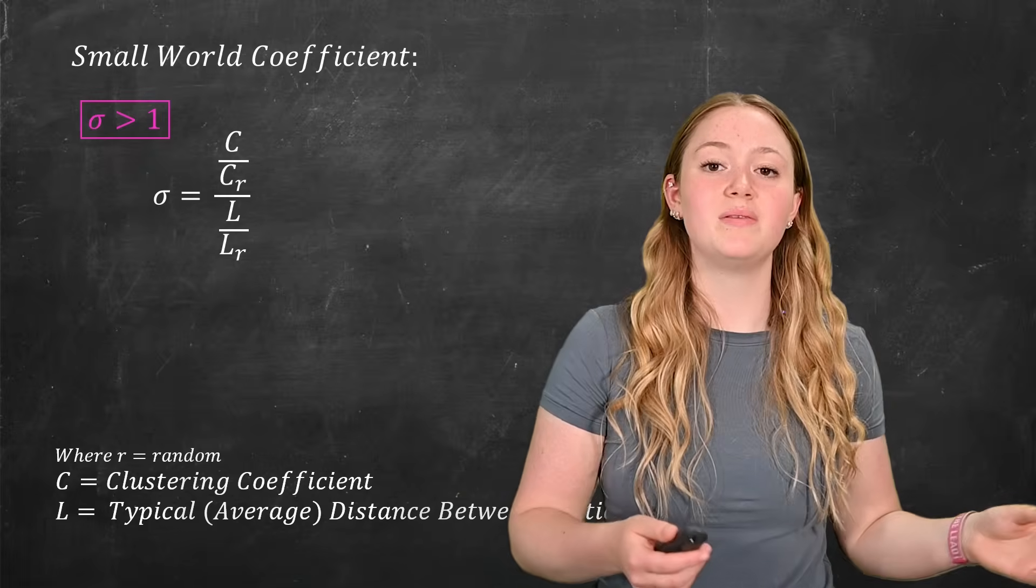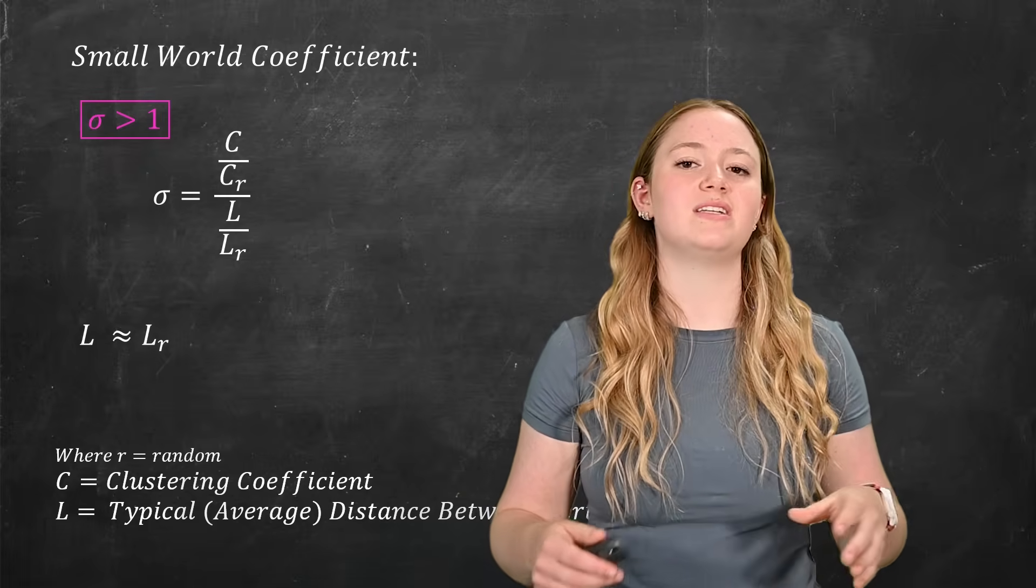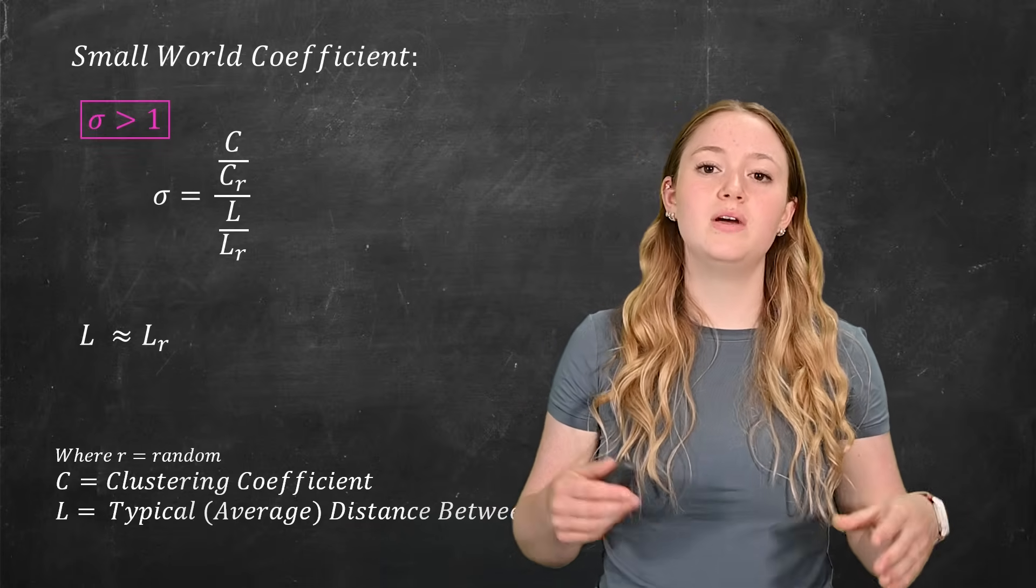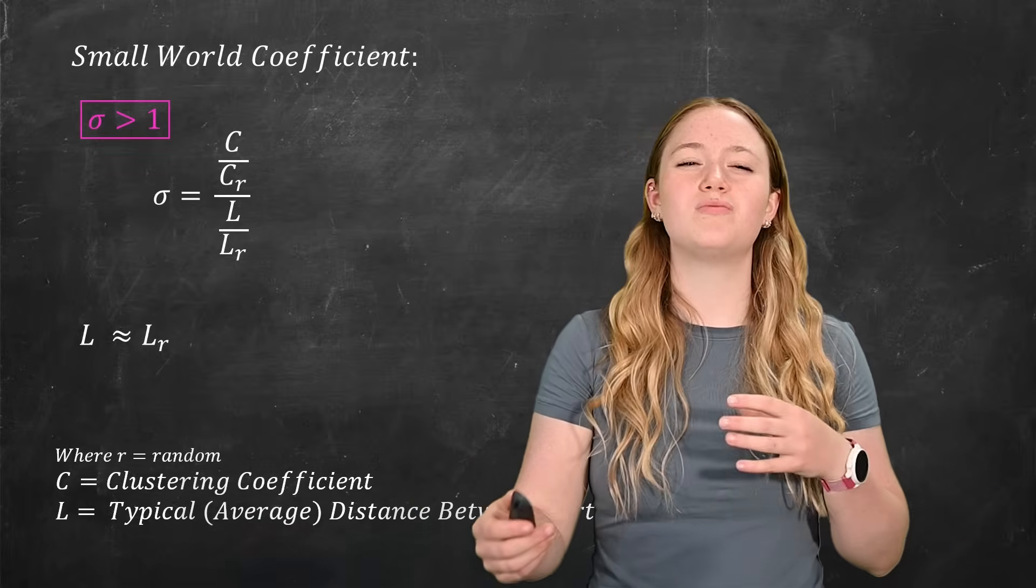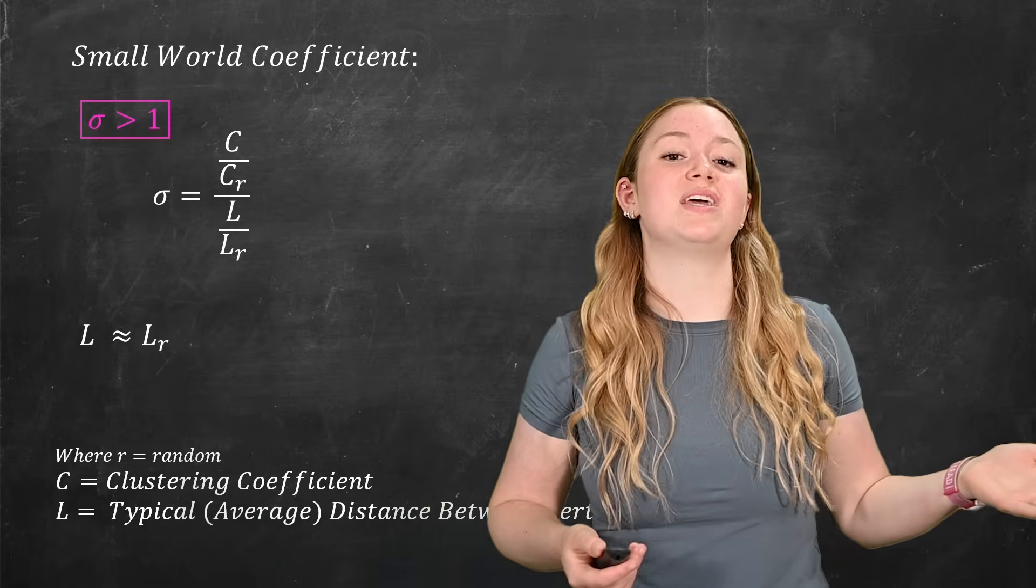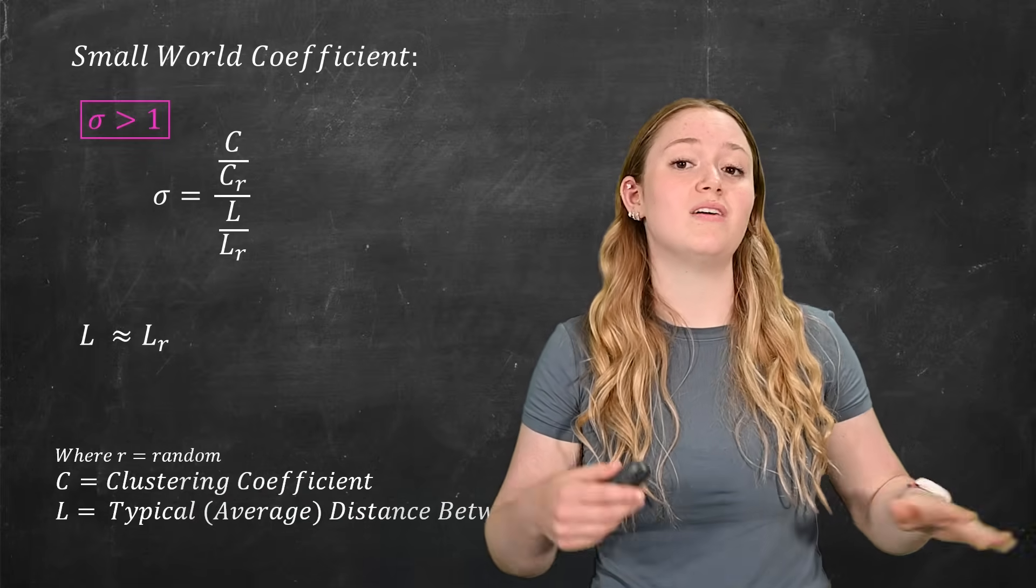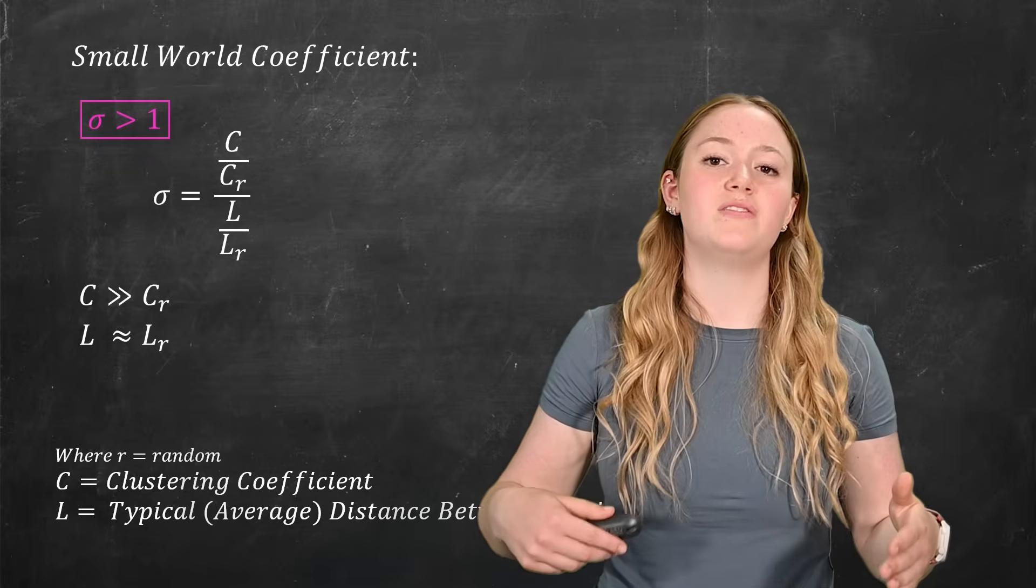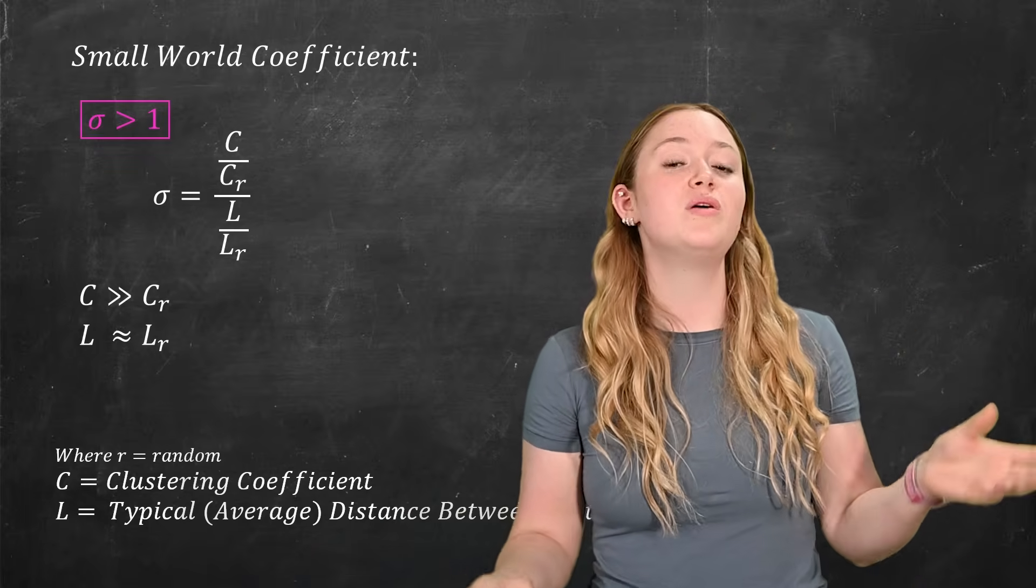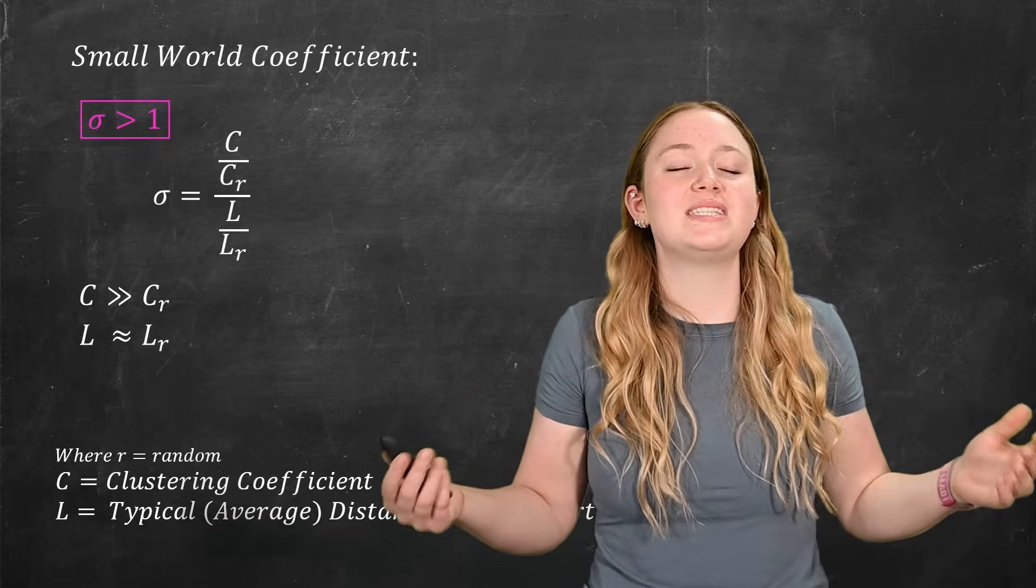And there's a couple of different ways that this will happen. So our average distance between nodes for our small world graph is going to be roughly equivalent to the average distance between nodes of a random graph because they have that equivalent density, which means their denominator is going to be roughly equal to one. As for our numerator, well, if we suspect that something is a small world graph, it's probably going to have a very high clustering coefficient, while for a random graph, it's going to be a much lower clustering coefficient, which means if we divide our suspected small world graphs clustering coefficient by our random graphs clustering coefficient, sigma should be greater than one, which meets that condition.